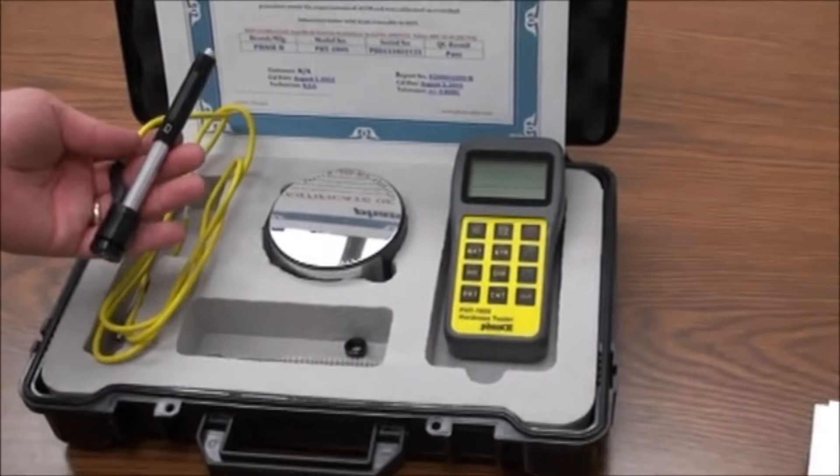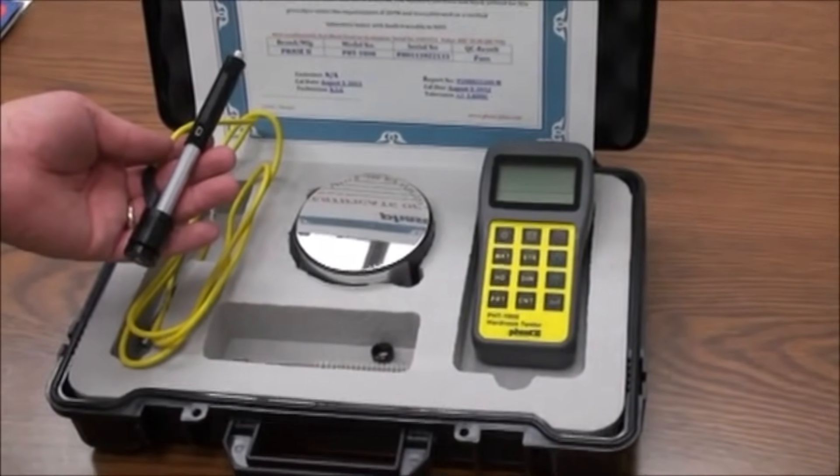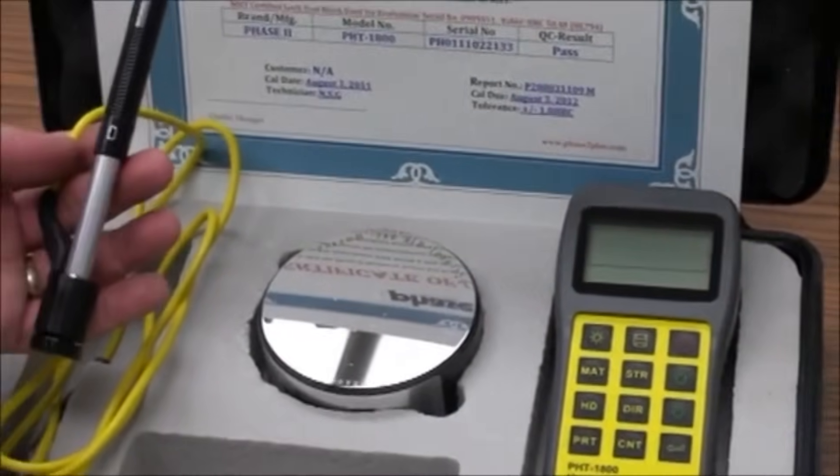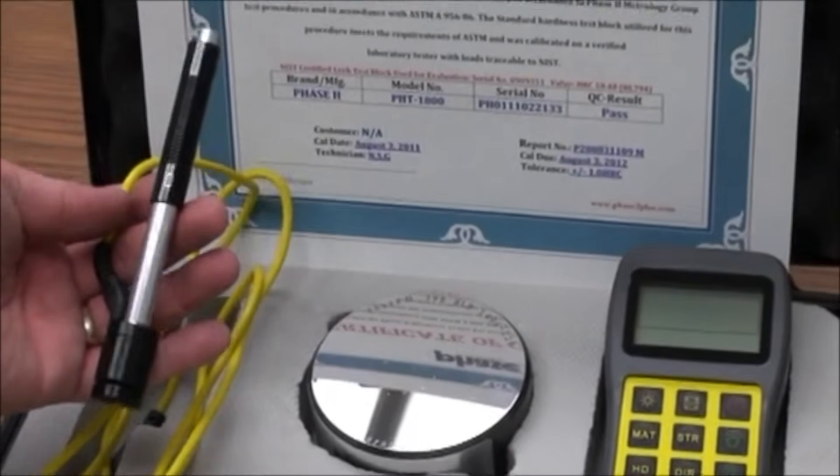The Phase 2 portable Lieb hardness testers have available the following probes for various applications. The D-Probe is a general purpose probe and comes standard on all models.